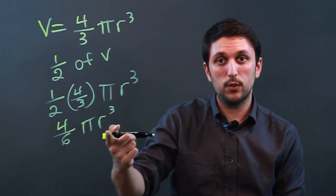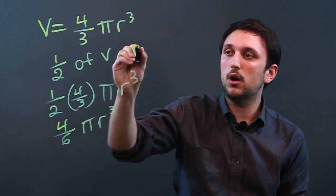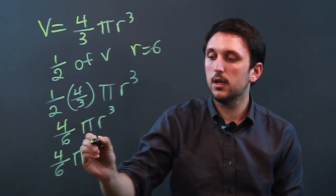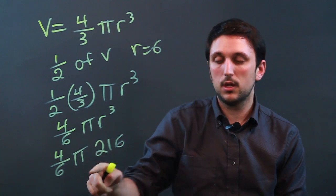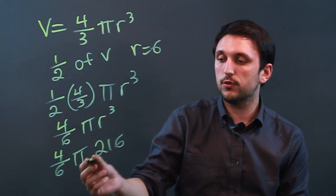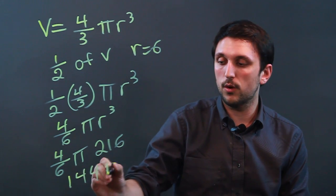And then we would need to know the value of r. Let's say for this equation r equals six. That means we have four-sixths pi times 216. Now, we need to take four-sixths of 216, which is going to be 144. So, we get 144 pi.